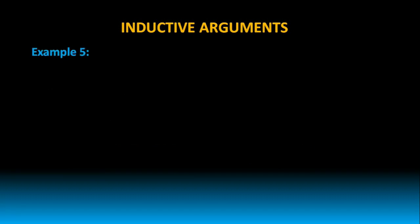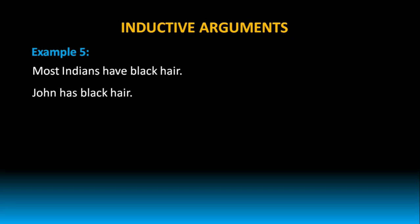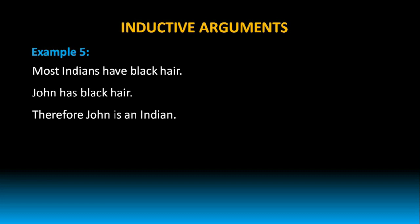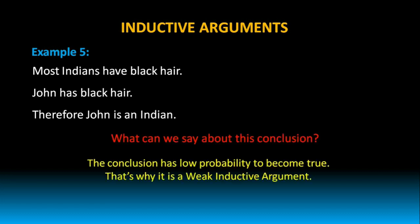Let us take one more example. Most Indians have black hair. John has black hair. Therefore, John is an Indian. What can we say about this conclusion? The conclusion has low probability of being true. That is why it is a weak inductive argument.